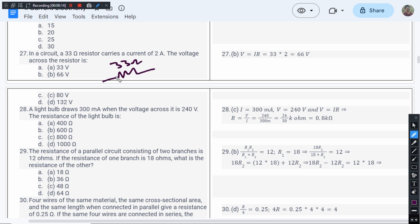A 33 ohm resistor carries a current of 2 ampere, and we need to find the voltage across the resistor. So this is a classic Ohm's law type of question. V equals IR. Here the value of I is 2 into